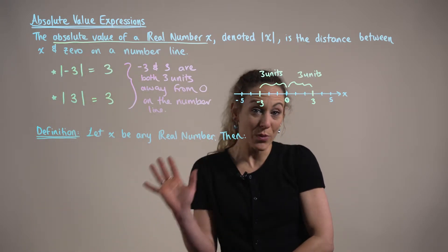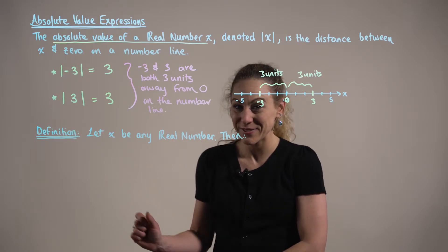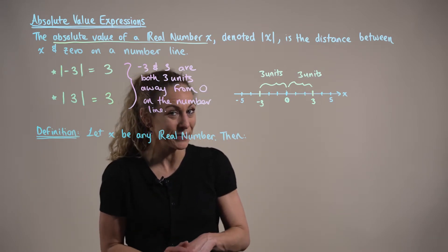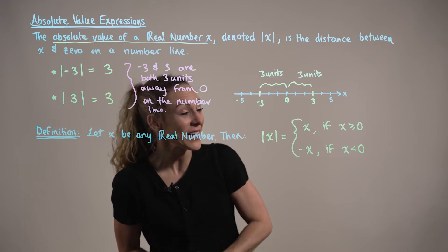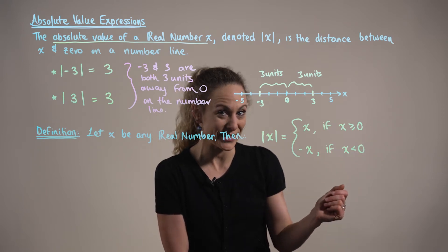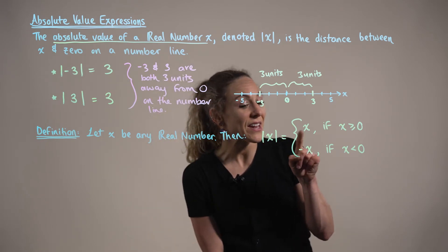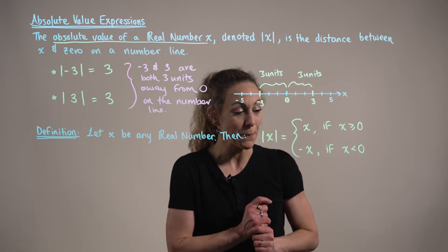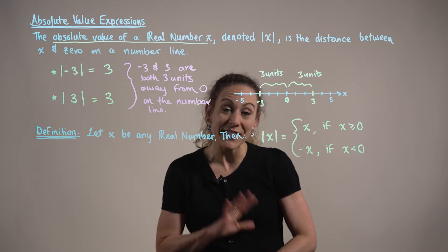Now that we have established some intuition for evaluating absolute value expressions, let's consider the formal definition. We begin by letting x be any real number. Formally, we define the absolute value as a piecewise function with two different cases for different parts of the domain. The absolute value of x equals positive x if x is greater than or equal to zero, whereas the absolute value of x equals negative x if x is less than zero.